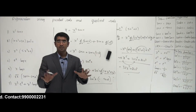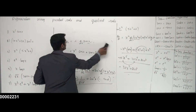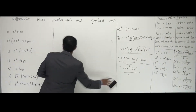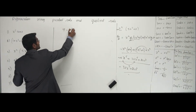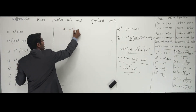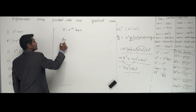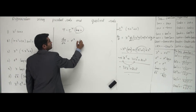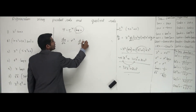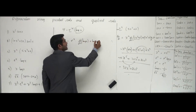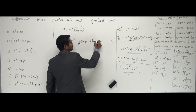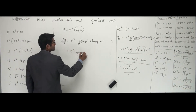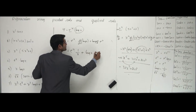Practice this — stop the video and try working yourself. Next: y = eˣ · log(x). So dy/dx = eˣ · d/dx[log(x)] + log(x) · d/dx[eˣ]. The derivative of log(x) is 1/x, and the derivative of eˣ is eˣ. So the answer is eˣ · (1/x) + log(x) · eˣ. Very simple.